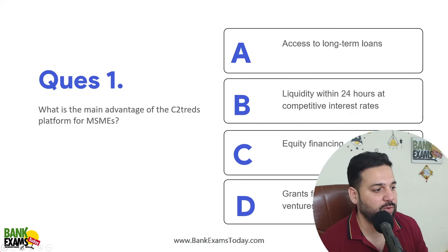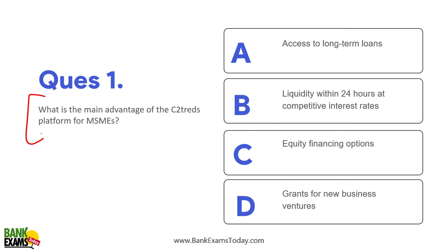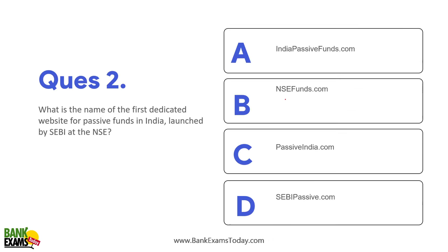Question number one: What is the main advantage of the C2Treads platform for MSMEs? I have already taught all these topics yesterday on YouTube. Please check the previous session — link is available in the description. The main advantage of C2Treads is to provide liquidity within 24 hours at competitive rates. That is the purpose of C2Treads.